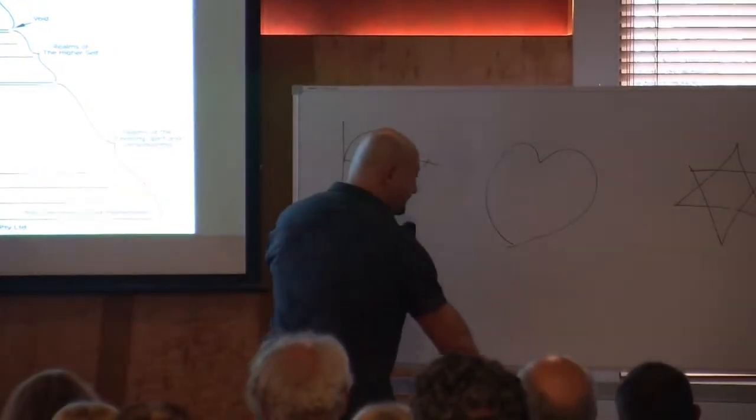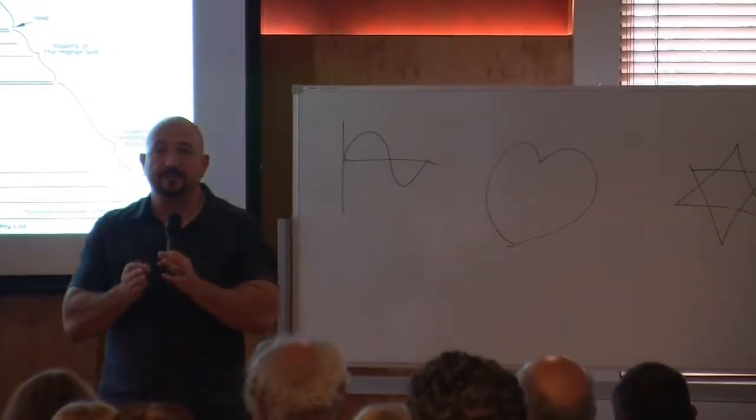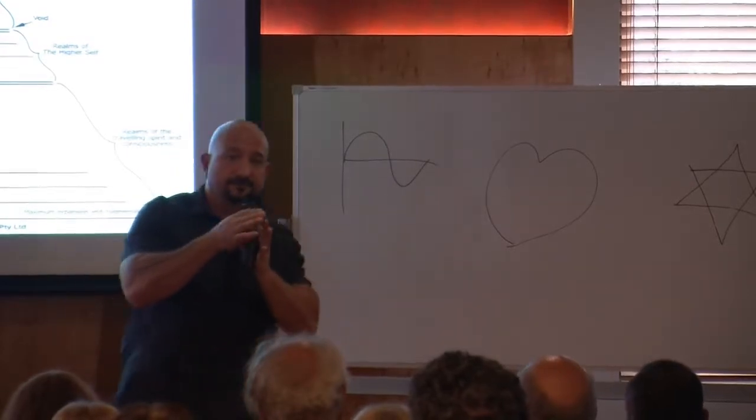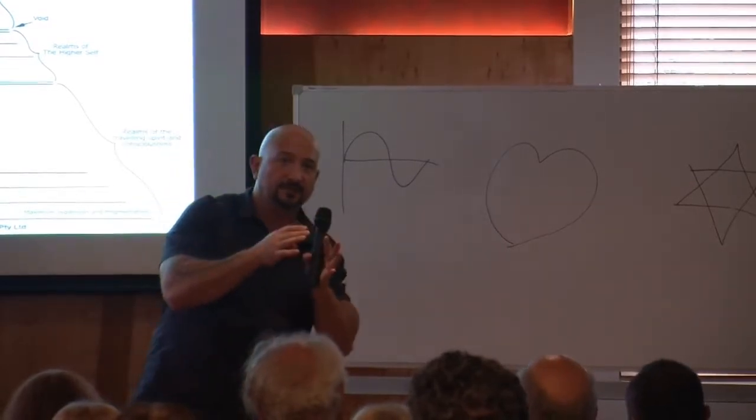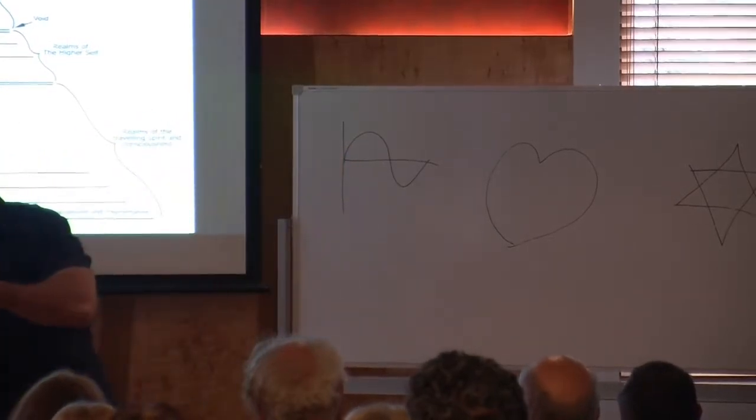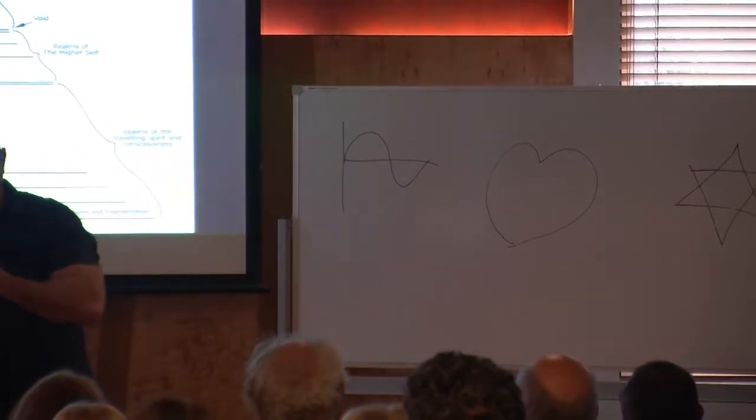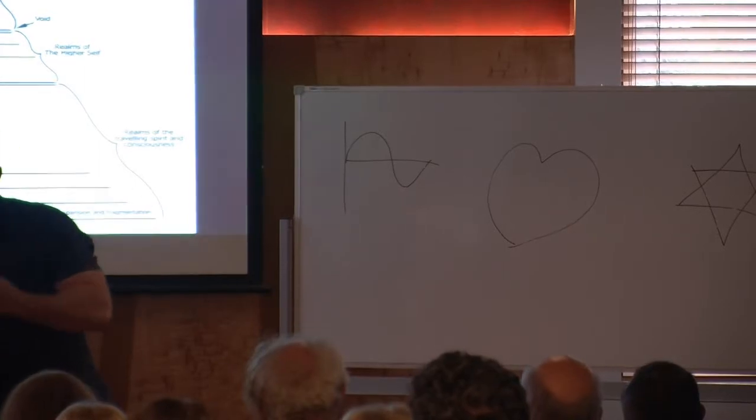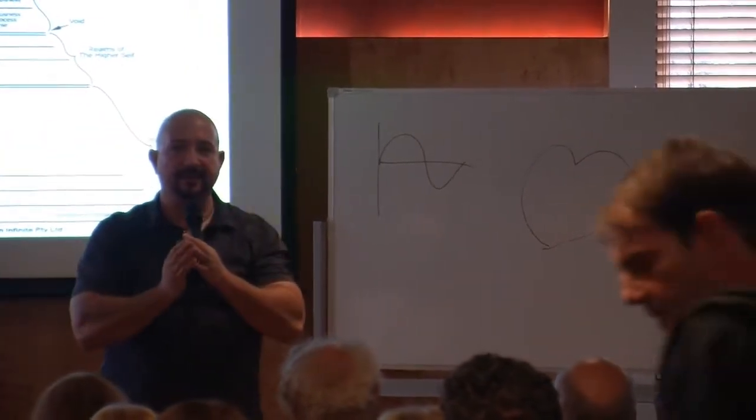So what the creator did was, it expressed itself one way away from center, from unity, and started going out of balance. And then it realized, whoa, I've got to express myself over here, an absolute counterbalance of the initial expression, so then it can come back in a balance.